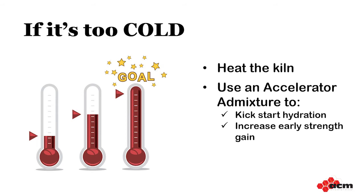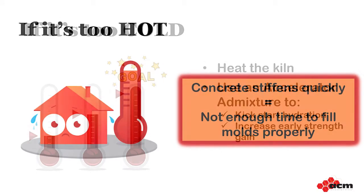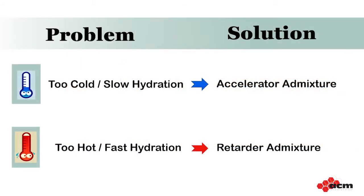The flip side of the weather coin is when it's too hot — say above 95 degrees Fahrenheit or 35 degrees Celsius — and the concrete stiffens and won't feed, fill, or compact properly. This can be especially troublesome when making three-color blends and one of the colors needs to sit in the hopper for an extended period of time. In these cases, a retarder can be useful to ensure that the concrete retains workability until we can form it into our final products.